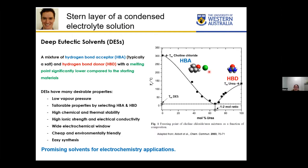A famous DES is choline chloride-urea. When mixed at a molar ratio of 1 to 2, the melting point drops by 100 degrees compared to the raw materials. DES has drawn great research attention because of its desirable properties: low vapor pressure, tailorable properties, high chemical and thermal stability, high ionic strength and electrical conductivity, and a wide electrochemical window. The raw materials are also relatively cheap, environmentally friendly, and easy to synthesize — you simply mix them and heat at 60°C with stirring for a couple of hours.